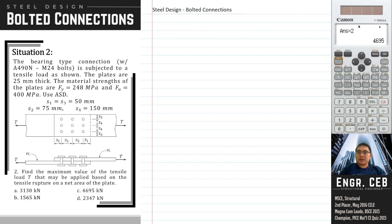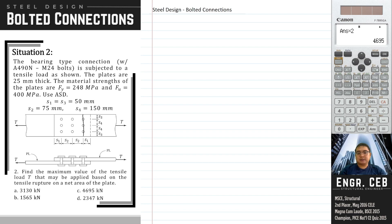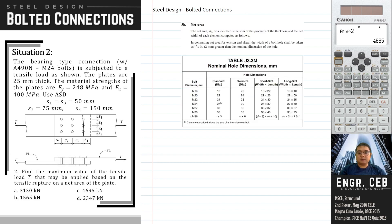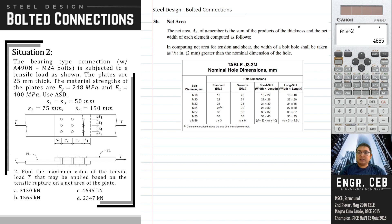Problem two: find the maximum value of the tensile load T that may be applied based on the tensile rupture on the net area of the plate. In getting the capacity based on rupture on net area, let's say we are analyzing the upper plate. We will be considering the net area along the first line of bolts. The net area of a member is the sum of the products of the thickness and the net width of each element — we just multiply the net width by its thickness.